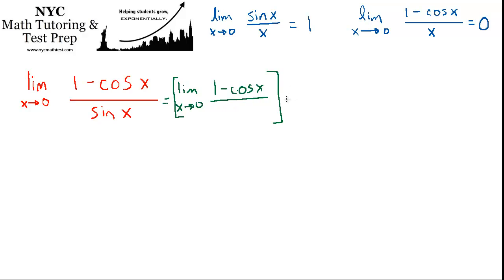And then I'm going to put something here in a minute. And that's times the limit as x approaches 0 of 1 over sin x. So certainly if you multiply 1 minus cos x times 1 over sin x, that'll get you right back here. So this is totally legal.